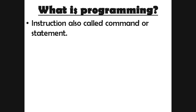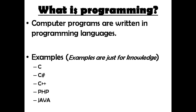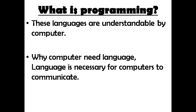Computer programs are written in programming languages. All the computer software on a computer is written by programmers, and the languages they use are programming languages. There are many programming languages available in the world — some examples are C, C#, C++, PHP, and Java, among many others.